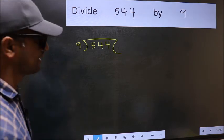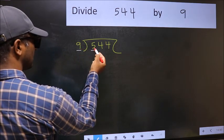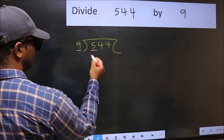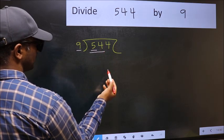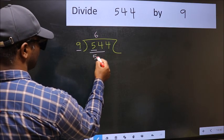Next. Here we have 5 and here 9. 5 is smaller than 9. So take 2 numbers, 54. When do we get 54 in 9 table? 9, 6, 54.